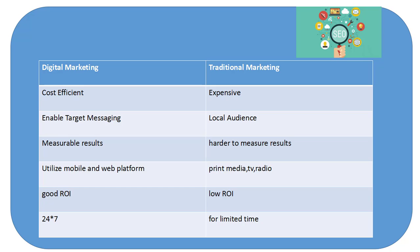In digital marketing, you can track every customer to see whether they are a potential customer for your company. The fourth point is that digital marketing is available on mobile and web platforms, which are the most widely used platforms in the modern world, whereas in traditional marketing we only have print media, TV media, radio, and other display media. In the modern world, people are mostly active on mobile and web platforms.